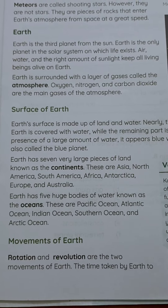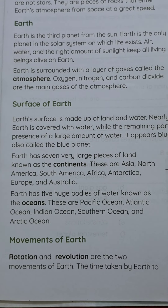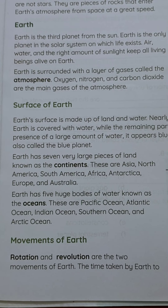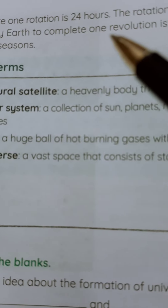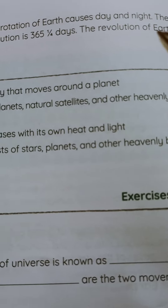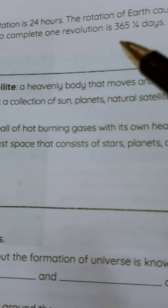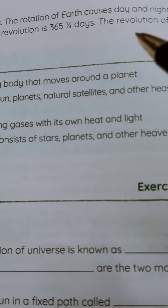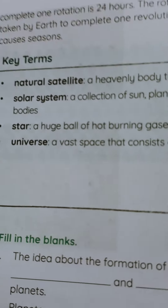Movements of Earth. Rotation and Revolution are the 2 movements of Earth. The time taken by Earth to complete one rotation is 24 hours, and the rotation of Earth causes day and night. The time taken by Earth to complete one revolution is 365 and one-quarter days, and the revolution of Earth causes seasons.